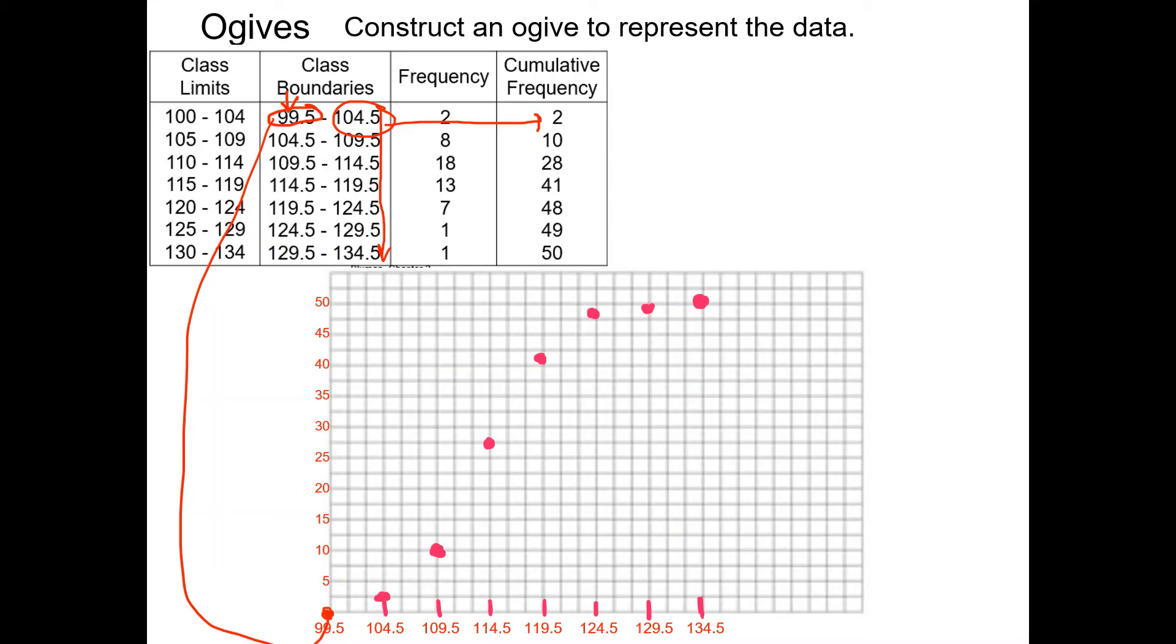And you want your graph to continually go up because it has to, according to this cumulative frequency chart. So if it dips down, you know that you went wrong somewhere on an ogive. So connect your points.